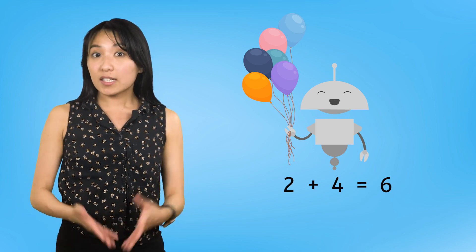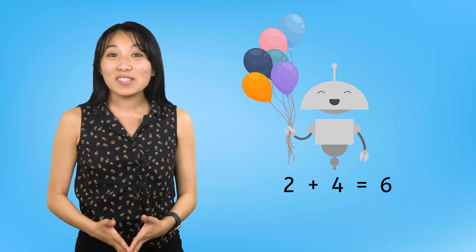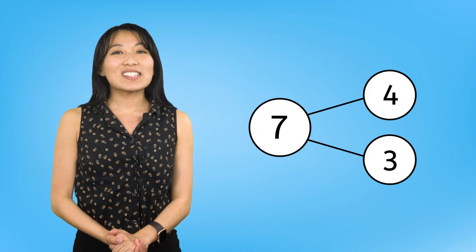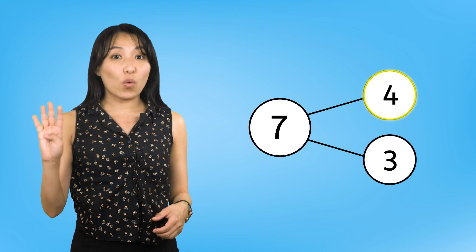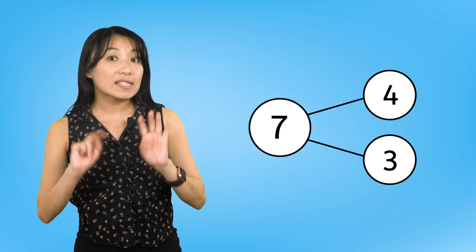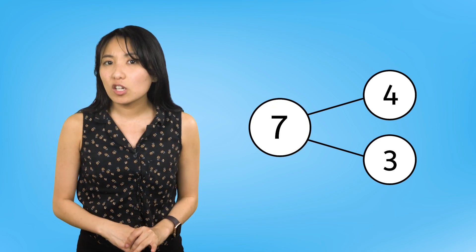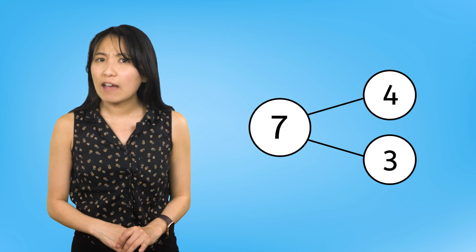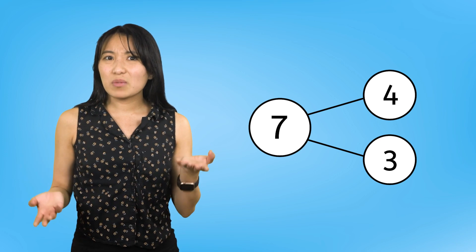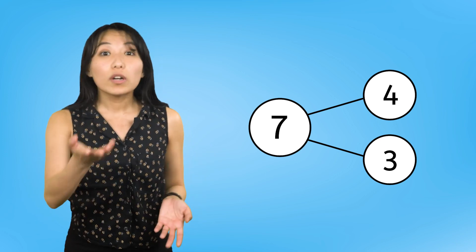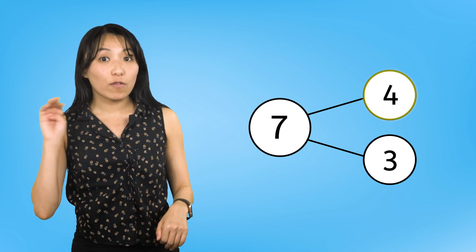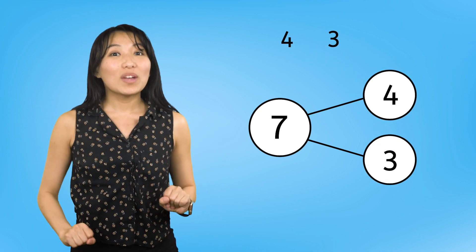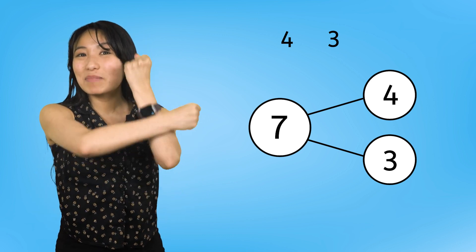Let's look at another number bond and see if we can write the number sentence to go with it. Here is our number bond, and it's already filled in. We can see the parts are four and three, and the whole is seven. Before we can start writing a number sentence, we have to ask: which two numbers are we adding together? We are adding the parts, four and three. To show that we are adding these two numbers together, we need to add a plus sign in between them.